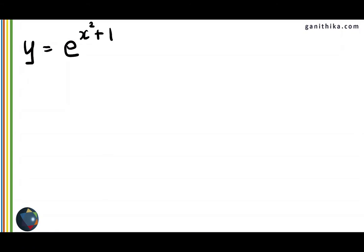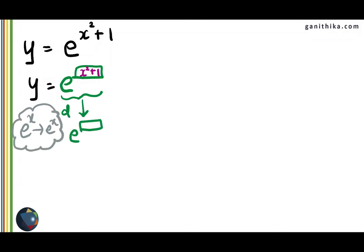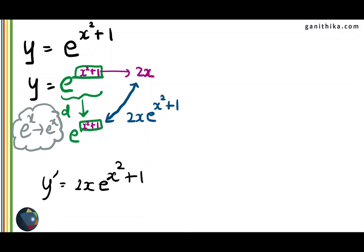We can actually speed it up. We don't have to write f of x and g of x and confuse ourselves. Here is a simpler method to apply chain rule. Take the same function e to the power of x square plus 1. Identify the outer function as e to the power of x, shown in green, and the inner function as x square plus 1. By chain rule, differentiate the outer function first: e power x becomes e power x as it is, but keep the inner function as it is. This gives f dash of g of x. Then differentiate the inner function to get 2x, multiply them, and you get 2x times e to the power of x square plus 1.